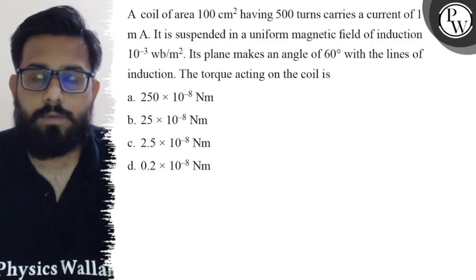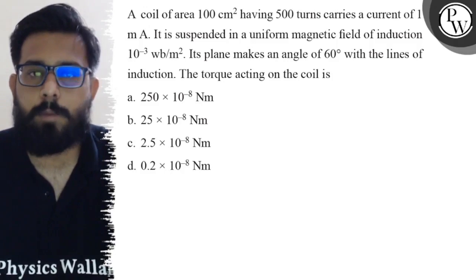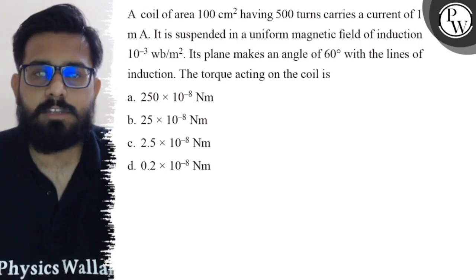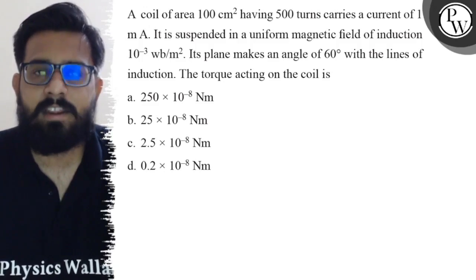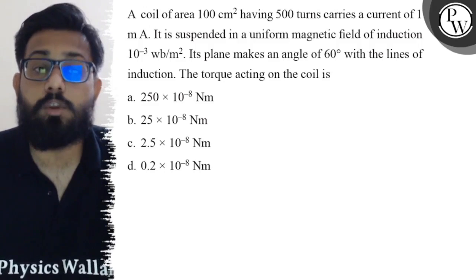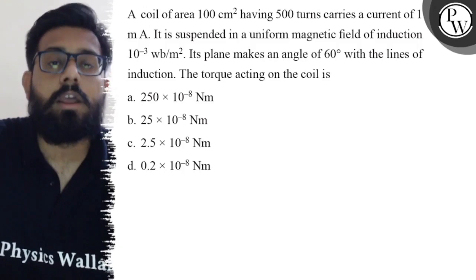The torque acting on the coil is: first option is 250×10^-8 Newton meter, second option is 25×10^-8 Newton meter, third option is 2.5×10^-8 Newton meter, and the fourth option is 0.2×10^-8 Newton meter.